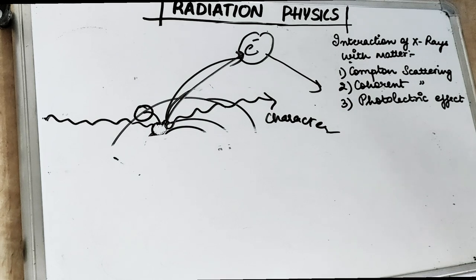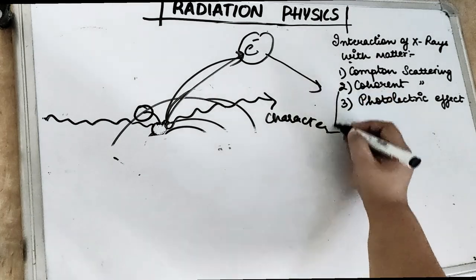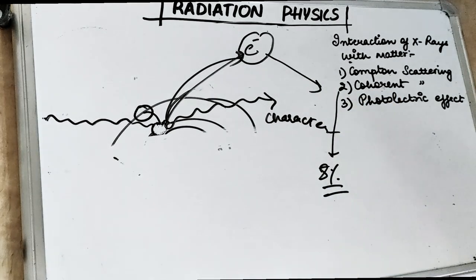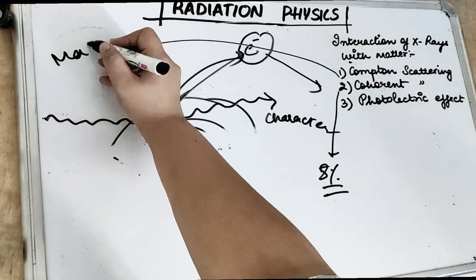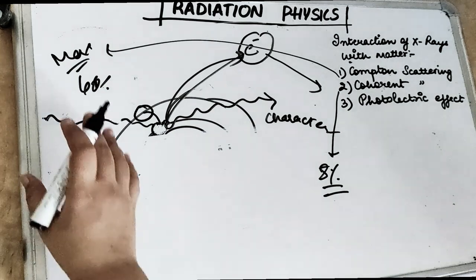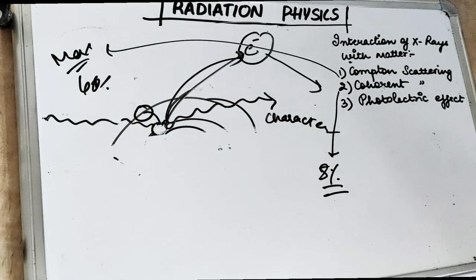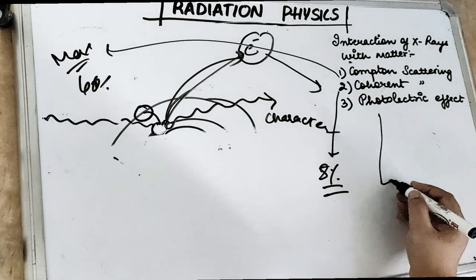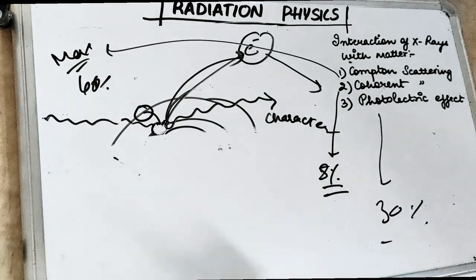Coherent scattering is also called Thomson scattering or classical scattering — there is no loss of energy. It accounts for about 8% of total interactions. Compton scattering is the maximum, accounting for around 60% of interactions. The remaining approximately 30% is the photoelectric effect.